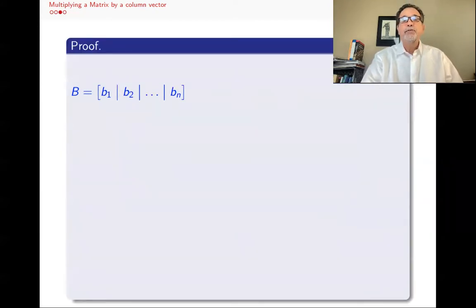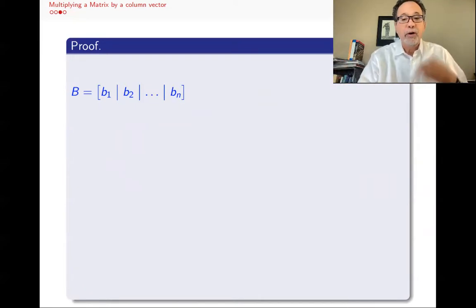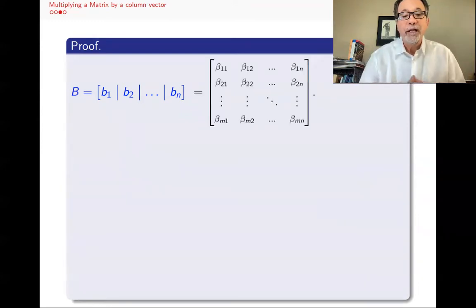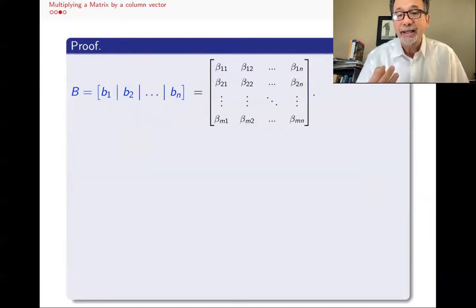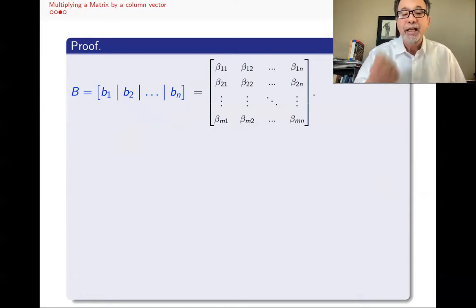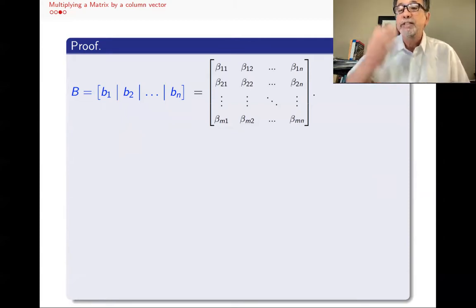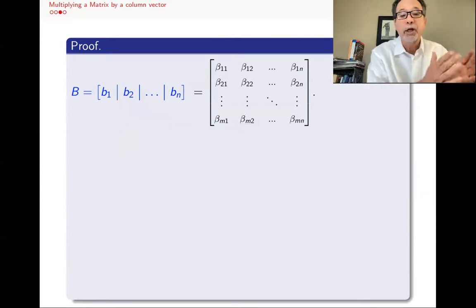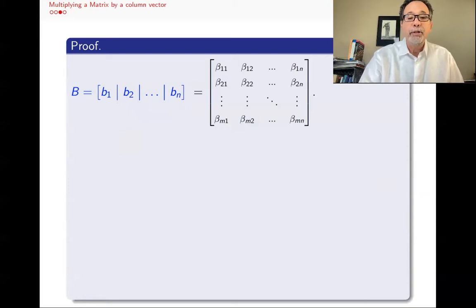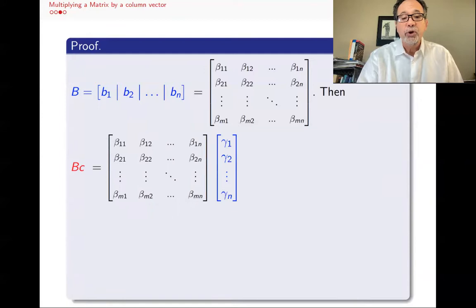The proof is straightforward — we just multiply it out and see that it works. So B has M rows and N columns, and here are the entries: β₁₁, β₁₂, through β₁ₙ is the first row of B, and β₁₁, β₂₁, through βₘ₁ is the first column B1. B2 is the second column β₁₂, β₂₂, through βₘ₂, and so forth. And I want to multiply B by the column vector C.